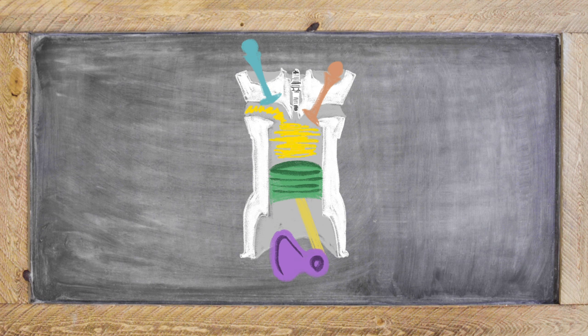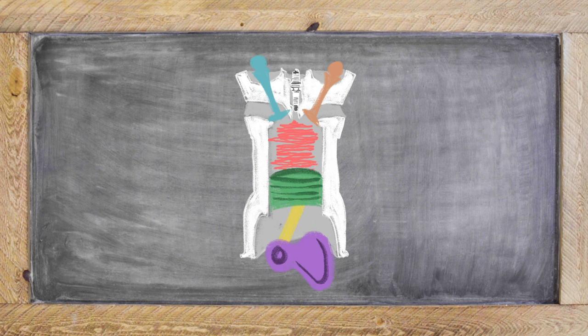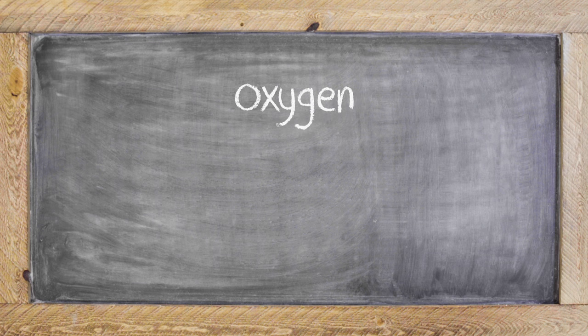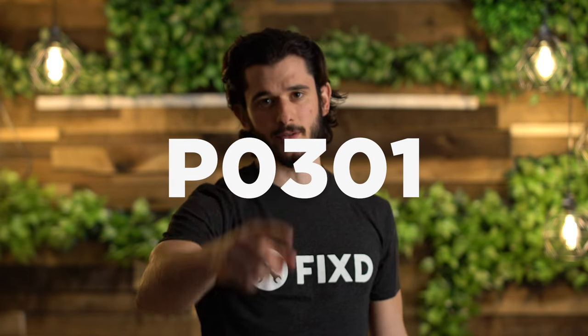Your cylinder intakes the fuel-oxygen mix. The piston compresses that mix. The spark plug ignites the mix to give power, and finally your cylinder is open to release the exhaust. Combustion requires three elements: oxygen, fuel, and spark. The intake stroke introduces oxygen and fuel, and the power stroke provides a spark. If any of these three components are messed up, the process gets out of sync and you get this error code.